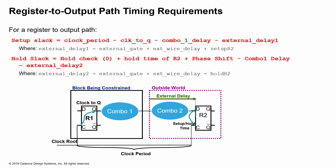For register-to-output paths, we again assume an outside world and determine an external delay. For setup slack, the same clock period is used as the launch clock, pretending there is another flop being driven outside using the same clock. The setup slack requirement is clock period minus clock-to-Q minus combinational delay one minus any external delay, which includes combo delay two plus setup time. For hold, the required time uses hold check plus hold time, and any phase shift, combo delay, and external delay are subtracted. This external delay must be defined through your constraints.